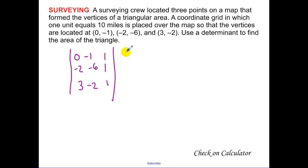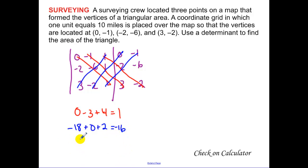Rewrite the first column. Find your main diagonal: that's 0, minus 3, plus 4. The other diagonal: negative 18, 0, and 2. That simplifies to 1, negative 16. Be careful - you do 1 minus negative 16, which gets 17.